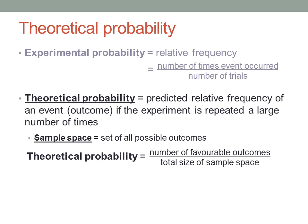The predicted relative frequency is the number of outcomes that match your particular event divided by the total number of possible outcomes in the sample space.